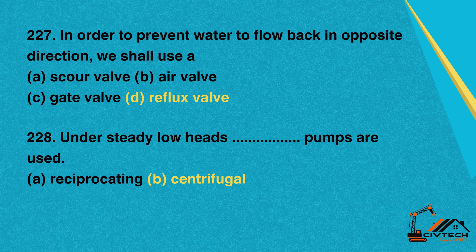Question 227: In order to prevent water to flow back in the opposite direction, we shall use. A. Scour valve. B. Air valve. C. Gate valve. D. Reflux valve. Correct option: D. Reflux valve.